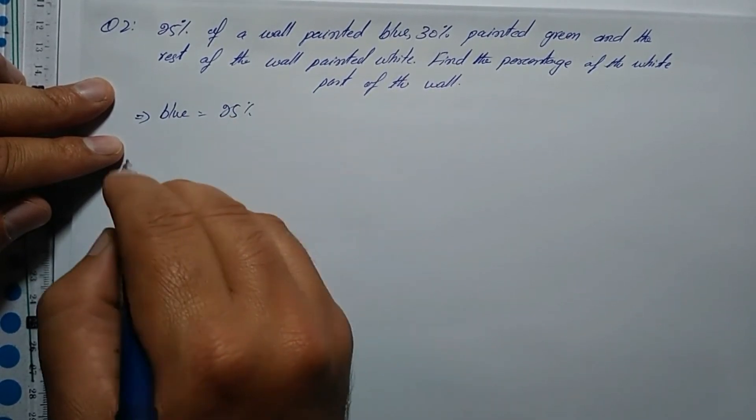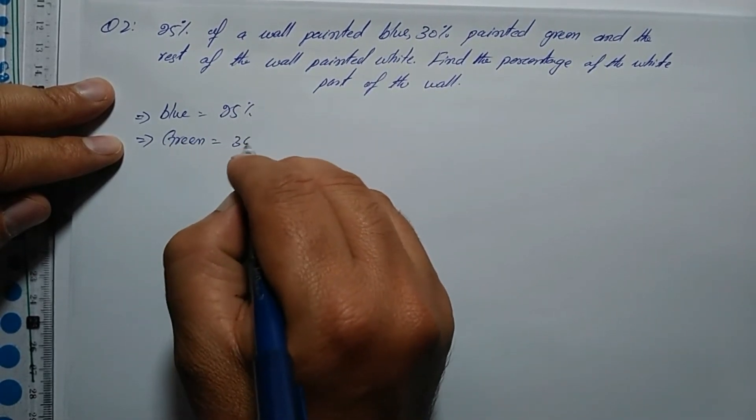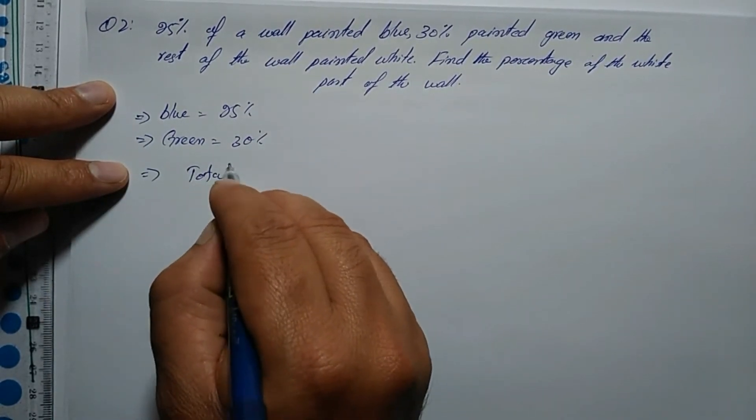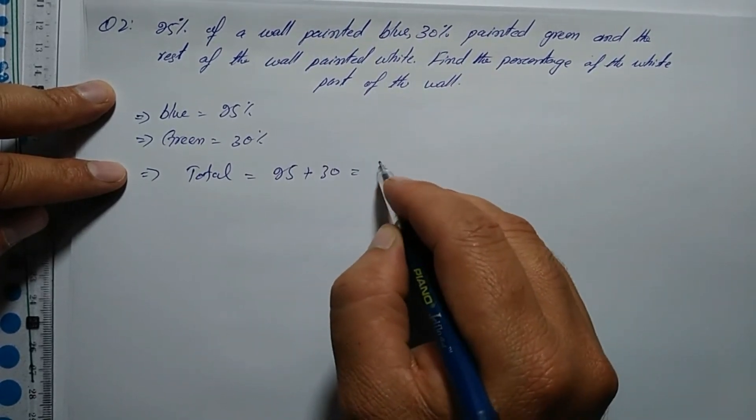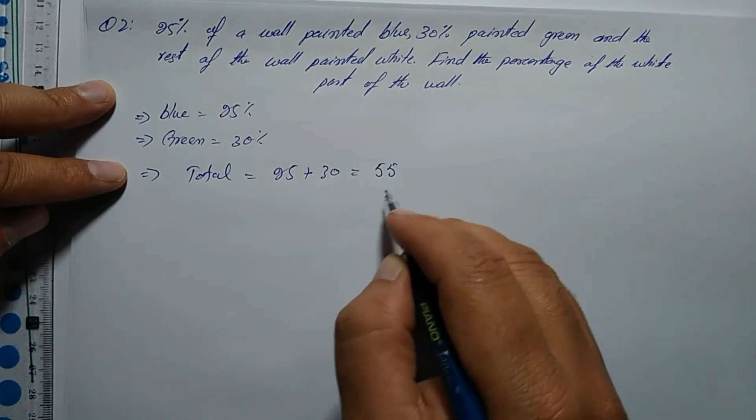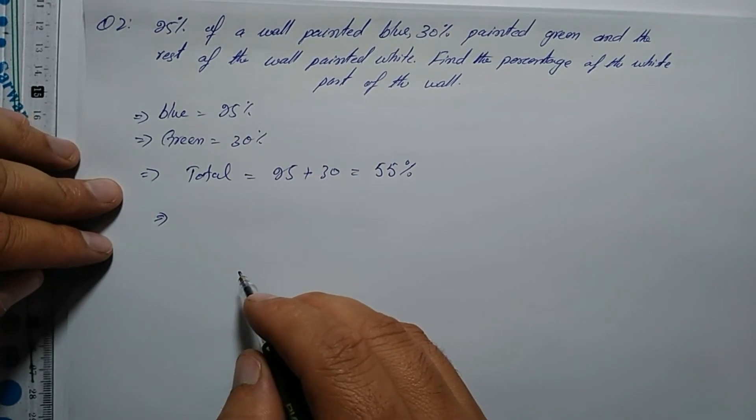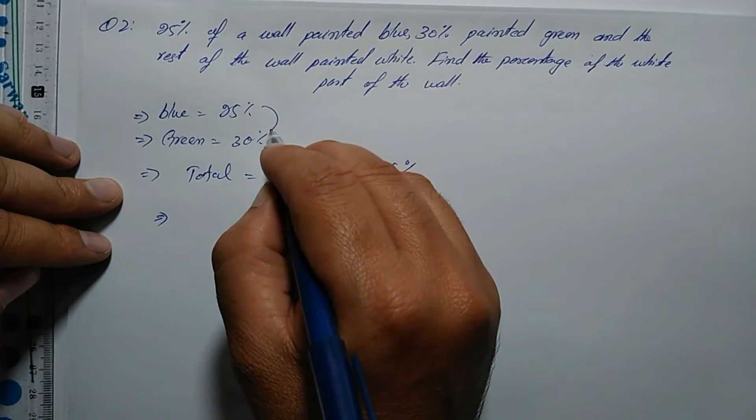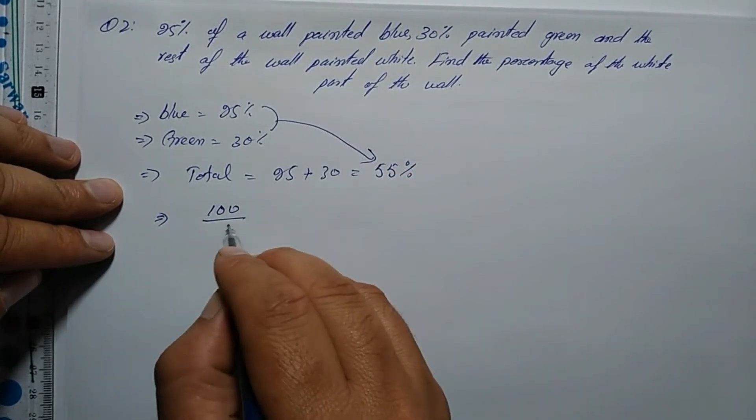Blue is 25 percent, green is 30 percent. The total of what's given is 25 plus 30, which equals 55 percent. Now we subtract this from the total.